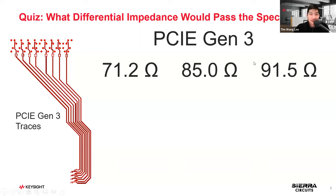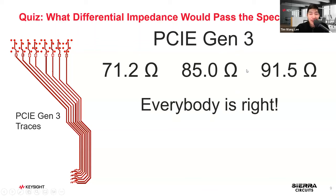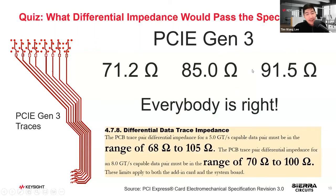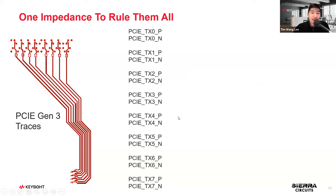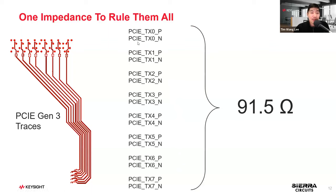Actually, everybody is right — we are all winners today! The spec states that the differential data trace ranges from 68 to 105 ohms, so all three choices fall within range. However, if you have eight differential pairs it would be impractical to have each one at a slightly different value, so we use one impedance to rule them all: 91.5 ohms. That way the trace width and spacing are identical for all of them.